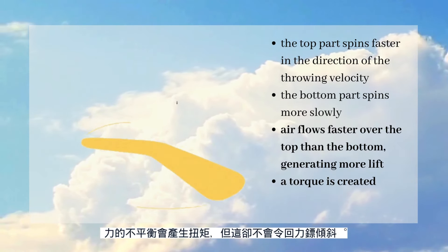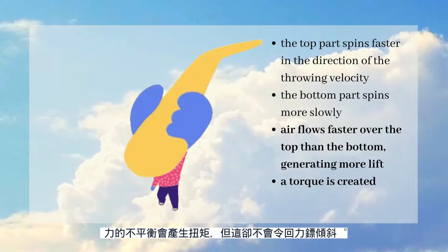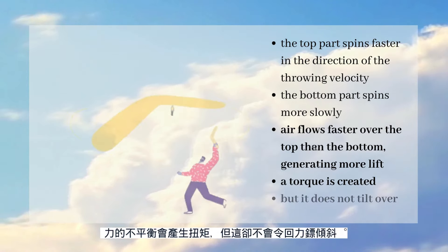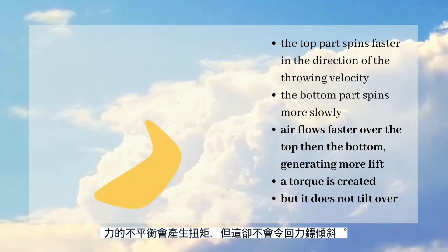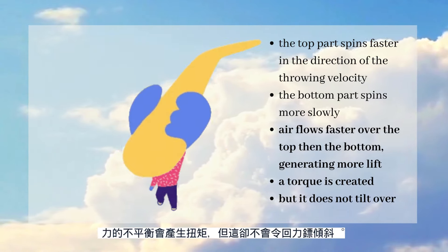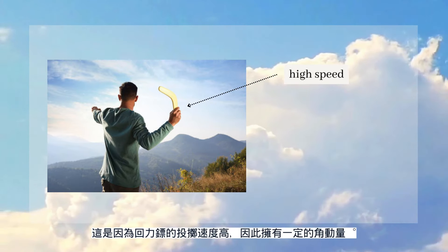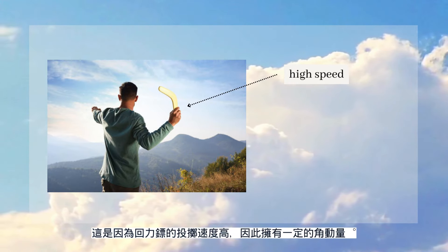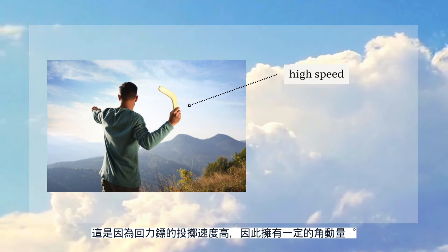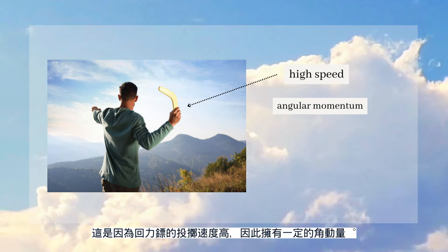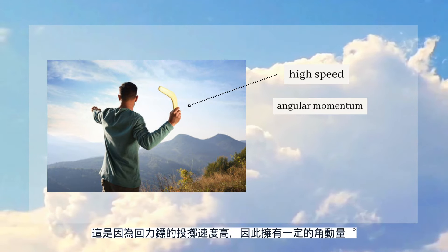This imbalance of forces generates torque, which you might expect to cause the boomerang to tilt over. But it doesn't, because the boomerang is thrown with very high speed, so it has a significant amount of angular momentum.